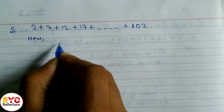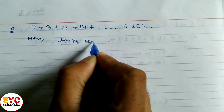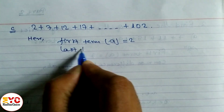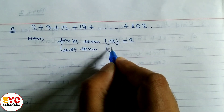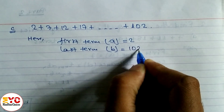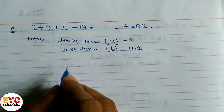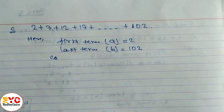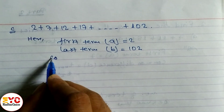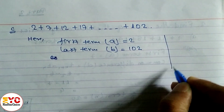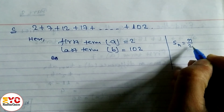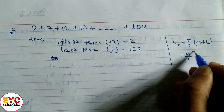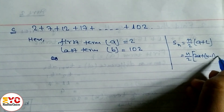First term a = 2, and last term l (or TN or b) = 102. We have two sum formulas: S_n = n/2 × (a + l), and S_n = n/2 × (2a + (n−1)d). Since l is given but n is not, we need to find n first.